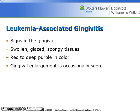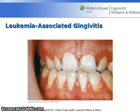Leukemia can also be associated with gingivitis. The gingiva is swollen, glazed, or spongy, and red to purple in color. Gingival enlargement is occasionally seen. Notice the swollen, red gingival tissues in a patient with leukemia.